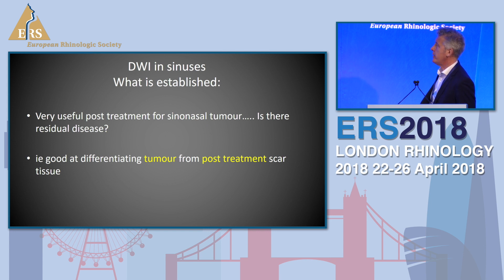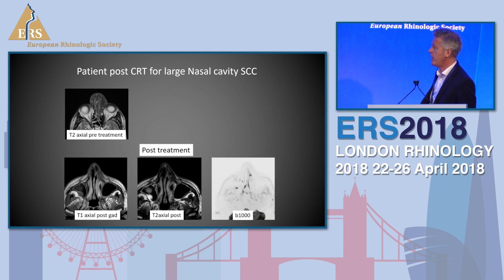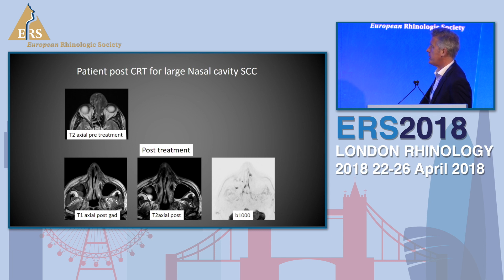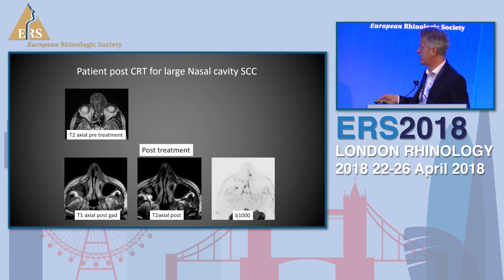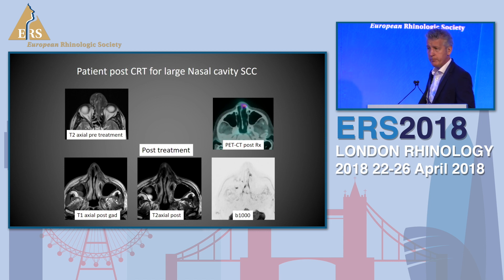What is established in the sinuses with diffusion weighting? It's very useful for post-treatment sinus tumour - is there any residual disease? It's good at differentiating tumour from post-treatment scar tissue. Here is a patient who had a very delayed diagnosis, treated as sarcoid for about 18 months - it was a big nasal cavity squamous cell carcinoma. After chemoradiotherapy, on the first scan you're thinking, is there a tumour there or not? There is obviously some residual soft tissue. You use the B-1000 and there it is restricting. You just invert the image and look for the black - that's all I do. It'll guide you back. A PET-CT confirmed the tumour was there, and biopsy confirmed tumour. So with diffusion weighting, you just invert it and look for the dark spot on the B-1000 to differentiate scar tissue from residual tumour.